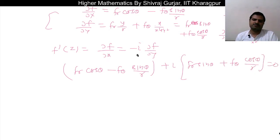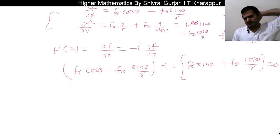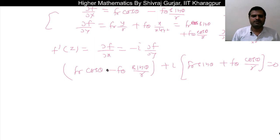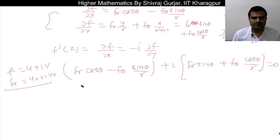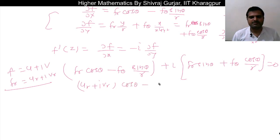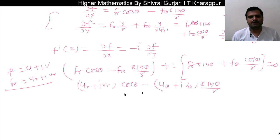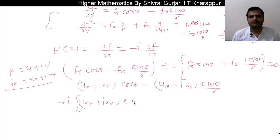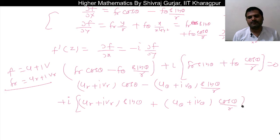This expression ∂f/∂x + i · ∂f/∂y should equal zero. Now f = u + iν, so f_r = u_r + iν_r and f_θ = u_θ + iν_θ. Substituting: (u_r + iν_r) cos θ − (u_θ + iν_θ) sin θ/r + i[(u_r + iν_r) sin θ + (u_θ + iν_θ) cos θ/r] = 0.